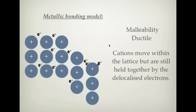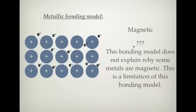Hopefully that makes sense. You've now explained all the properties of metals — you need to know those properties and how the structure links with them. One last thing: magnetic. This bonding model does not tell you why some metals are magnetic — it's actually to do with the nuclei and the spin of the atom, the protons and neutrons in the nuclei. So this bonding model has a limitation: it cannot explain why some metals are magnetic. Now we're going to look at modifying metals.